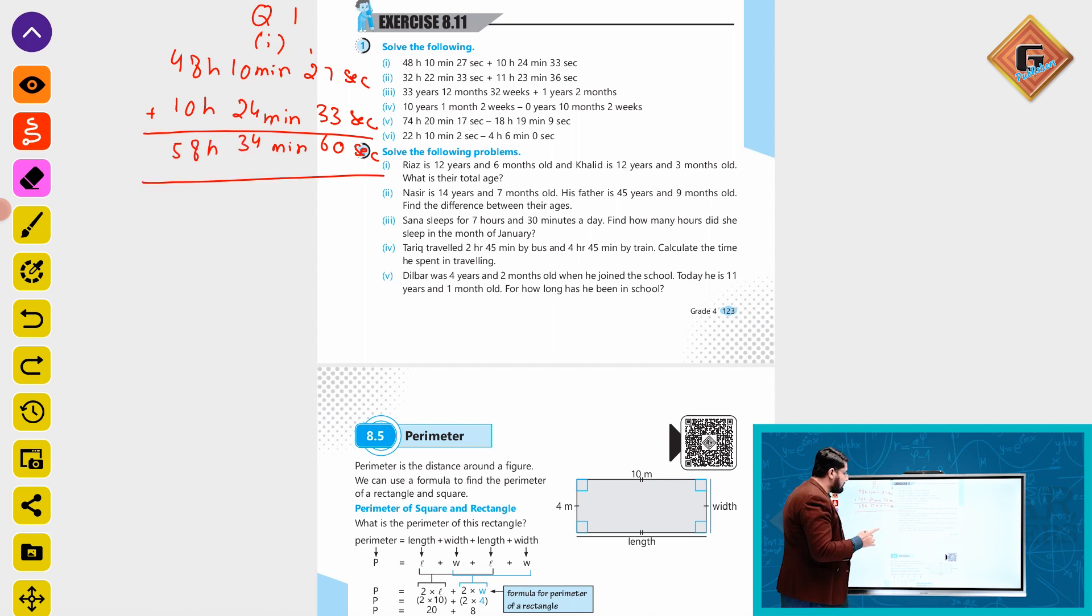So see, 60 seconds is equal to one minute. I can write it as 48 hours, 34 minutes plus 1 minute. How much is that? 58 hours and 35 minutes. That will be our answer.